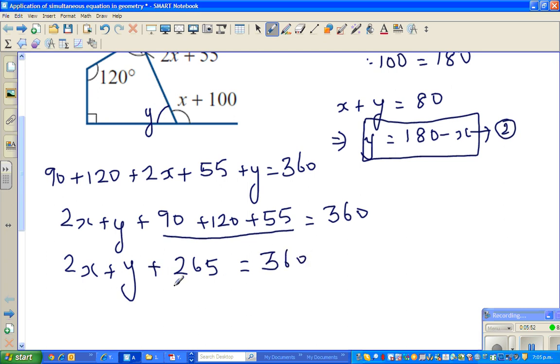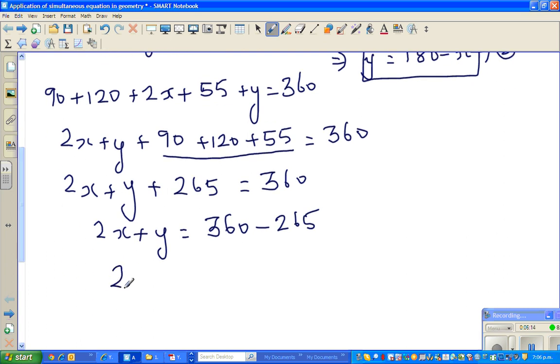So 90 plus 120 plus 55, that is 265. So can I say plus 265 is equal to 360. So if I take away 265 from both sides, 2x plus y is equal to 95.